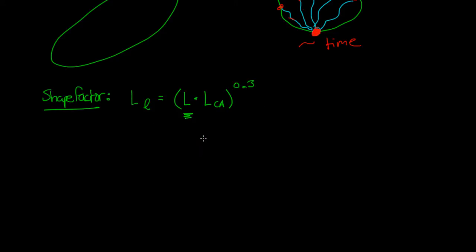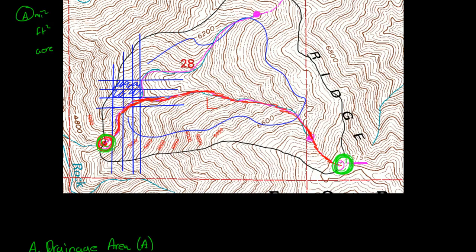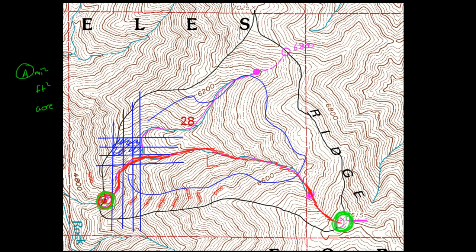We know what L is. That's the watershed length, the distance from the outlet to the highest elevation along the main channel. But LCA is something we haven't learned yet. LCA is the distance along the main channel up to the centroid of the watershed. And it's the distance from that point. Well, actually let me just draw it out for you. It's probably easier to explain it using a picture.